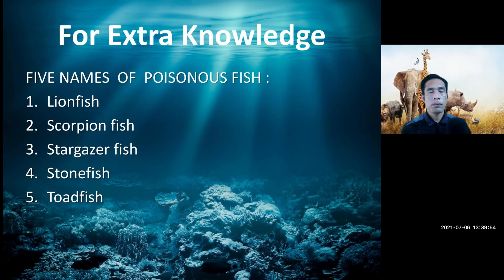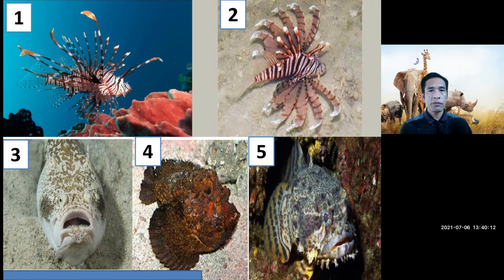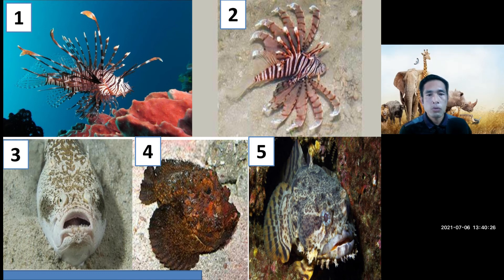For your extra knowledge, which you will find at the bottom of your page, five names of poisonous fish. Number one is the lionfish, number two is the scorpion fish, number three is the stargazer fish, number four is the stonefish, and number five is the toadfish.